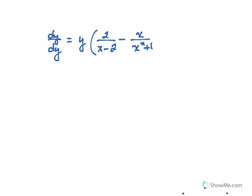It's perfectly acceptable to leave our answer like that. Remember that with implicit differentiation, we often have both x's and y's in our answer. Another option — and you will see this sometimes — is to substitute in place of y the original expression, which in this case was the quantity x minus 2 squared over the square root of x squared plus 1. Either way is fine. You could even distribute and simplify further after substituting, but it's not necessary. It would be perfectly fine to stop at the line where the answer is y times the quantity 2 over x minus 2 minus x over x squared plus 1.